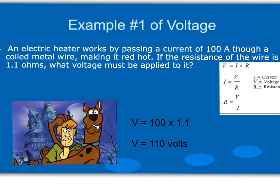Here we have an electric heater that works by passing a current of 100 amps through a coiled metal wire, making it red hot. If the resistance of the wire is 1.1 ohms, what is the voltage that must be applied? Our voltage equals current times resistance: 100 amps times 1.1 ohms gives us a voltage of 110 volts.